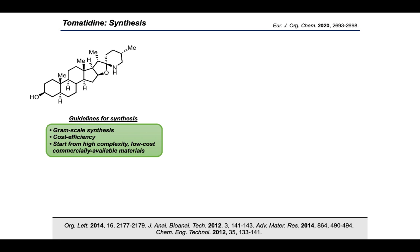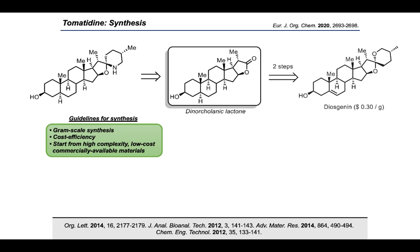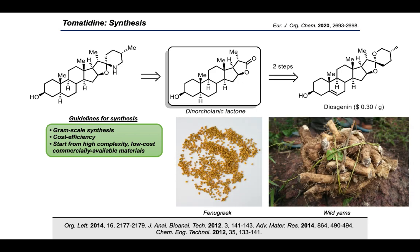We first highlighted a few guidelines for the synthesis. The first and very important one was to develop a semi-synthesis, avoiding construction of the complete steroid backbone. We identified the dynorcholanic lactone as a decent starting point, as it already contained five of the six carbocycles needed, with malleable moieties at both ends. We would only need to build the F-ring. This molecule was traced back to diosgenin, collected on the industrial scale from acidic hydrolysis of fenugreek and yam, sourced at a cost of only 30 cents per gram.